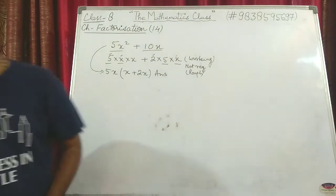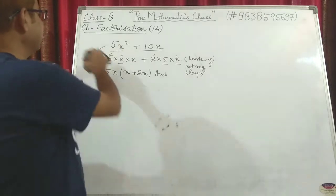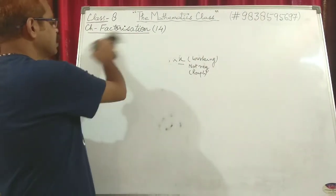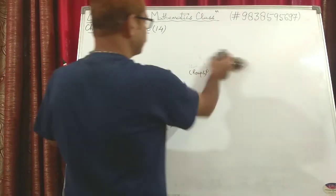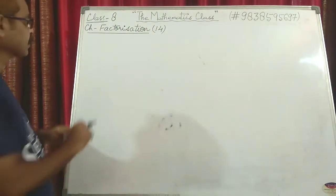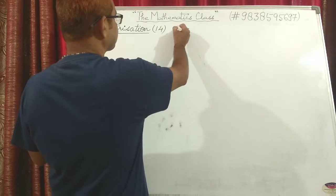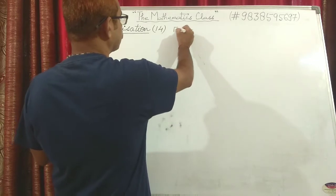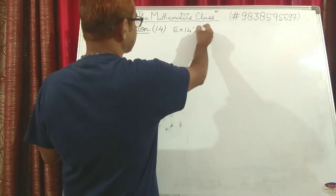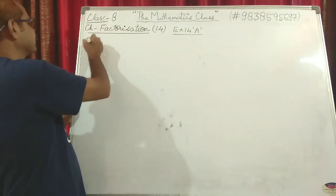Now we move on to the exercise. The first exercise is 14a and it has 21 questions. We will be solving in multiples of 2, so I am writing exercise 14a and we start with the second question.